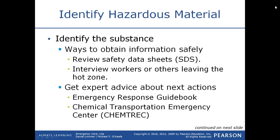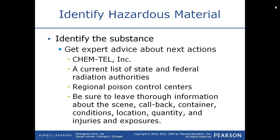Once you determine the substance, look at the Safety Data Sheet — formerly called the Material Safety Data Sheet or MSDS, now just the Safety Data Sheet. It gives you the chemical name, company contact information, and toxicity information. If you don't have access to a Safety Data Sheet, you can look it up in the Emergency Response Guidebook or call CHEMTREC — the Chemical Transportation Emergency Center — and they can assist you.